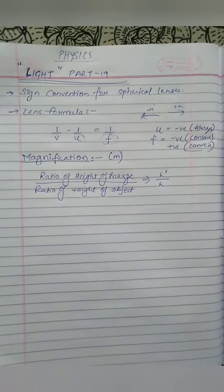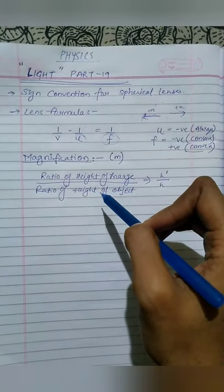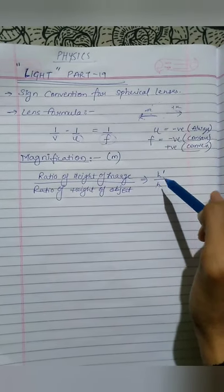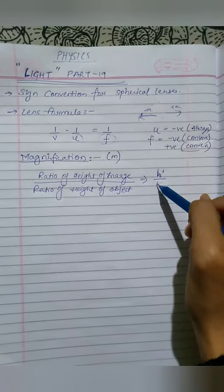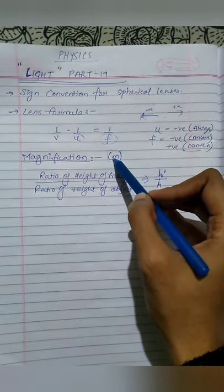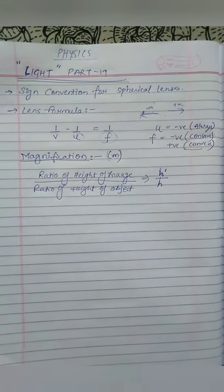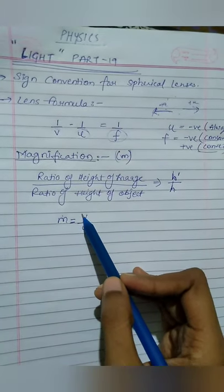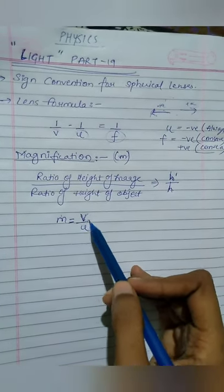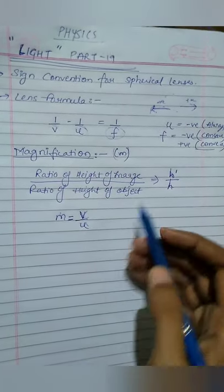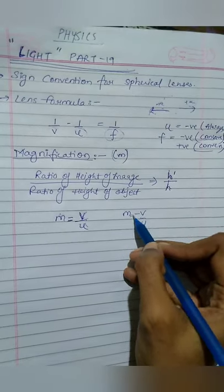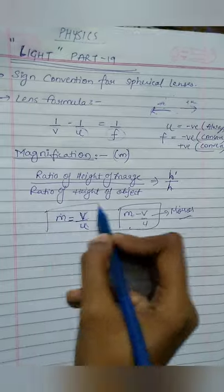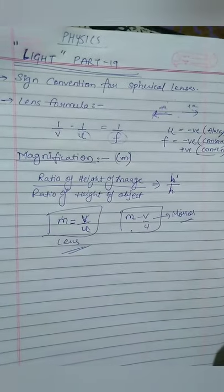Magnification, like in the mirror, is the ratio of the height of the image to the height of the object. The height of the image is h' and the height of the object is h. We denote magnification by small m. In the case of a mirror, magnification is -v/u. In the case of a lens, magnification is equal to v/u — this is positive, unlike the mirror formula.